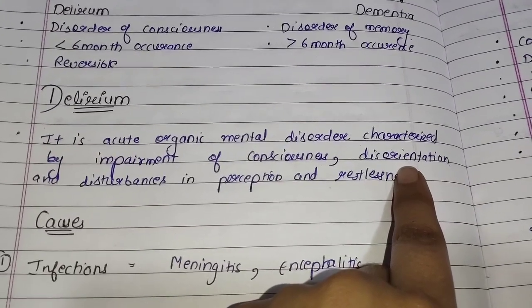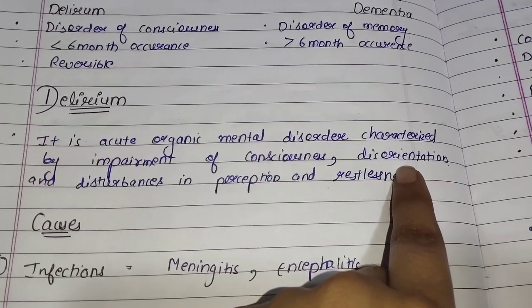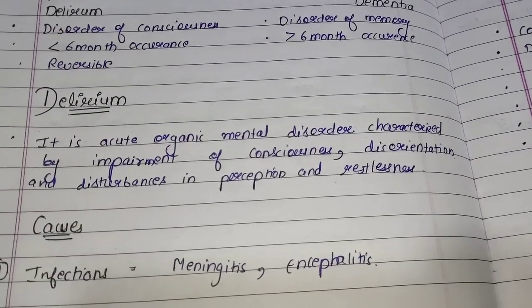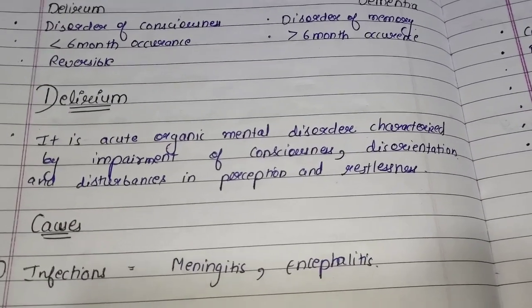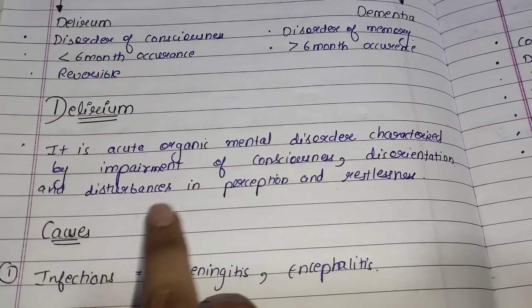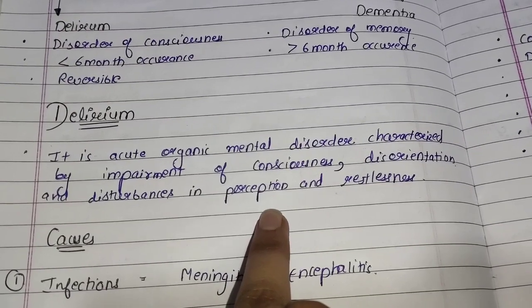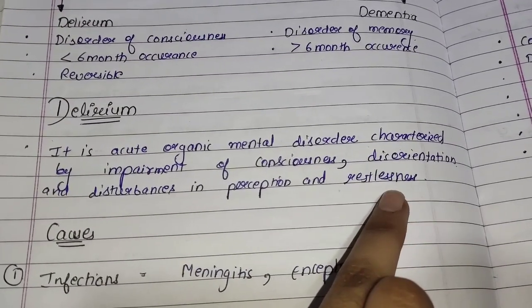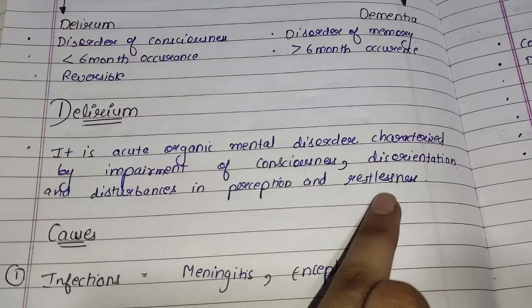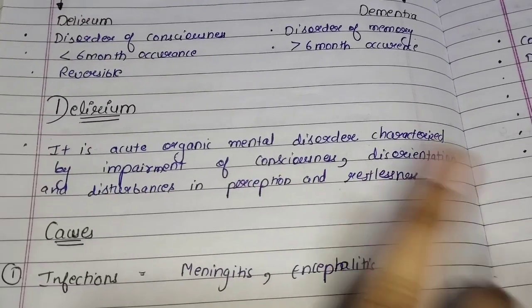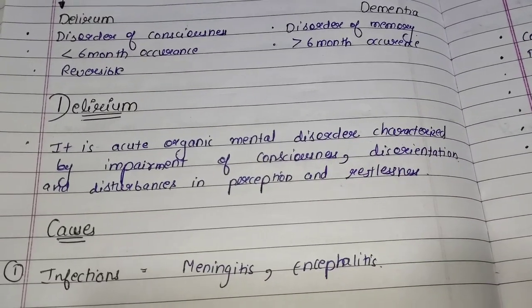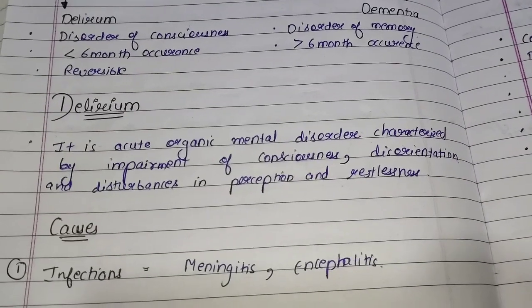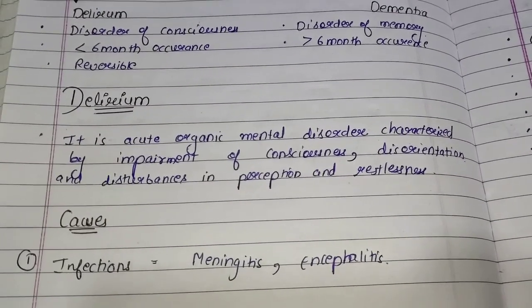In delirium, there is disorientation, meaning the person is unstable and confused, and the person experiences disturbance and restlessness.